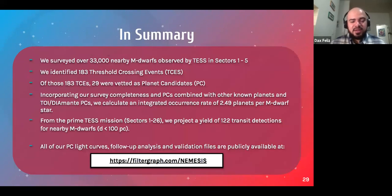So to summarize, we surveyed over 33,000 M dwarfs that are within 100 parsecs in TESS sectors one to five. Of those 33,000, 183 of them were threshold crossing events, meaning they were flagged as being transit detections. And of those 183 after group vetting and numerous process of reanalysis, 29 of them were vetted as planet candidates. Additionally, when we look at our 2D survey completeness maps of our planet candidates combined with other planet candidates and known planets, we found that we get an integrated occurrence rate of about two and a half planets per M dwarf star in bins of orbital periods from one to nine days and half to 11 Earth radii. So that means for any given M dwarf star at short periods, there should be two and a half planets in that system, which is really exciting to think about, meaning that there should be more multi-planet systems that are discovered. And it's something we're going to look out for in the future.